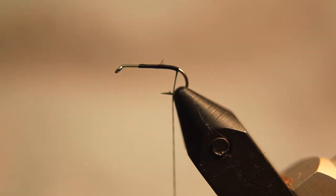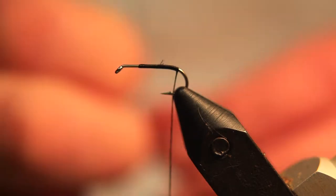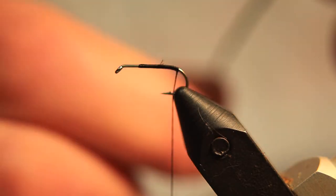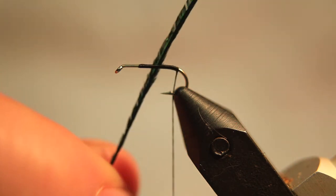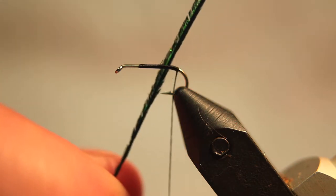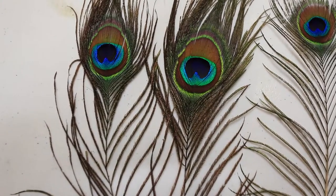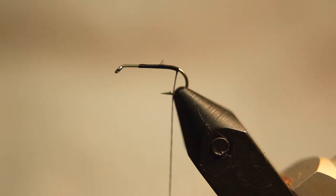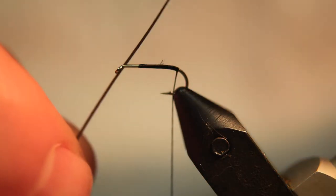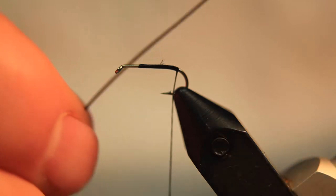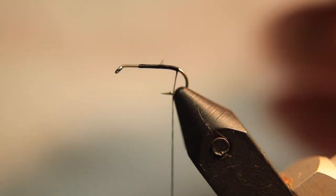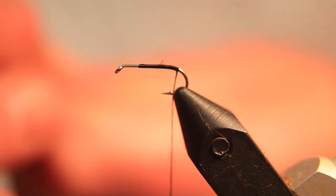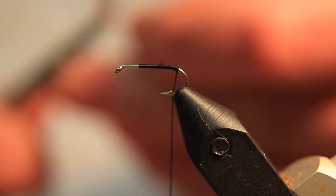Now we need to take ourselves a strand of peacock herl from the sword. This is essential that you take it from the sword, and we need to remove the flue from that stem. Once we've removed the flue, we'll have a bare stem of the peacock herl, and this is what gives the segmentation of the natural insect.